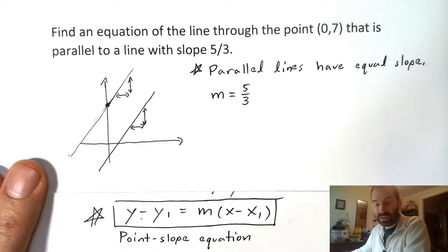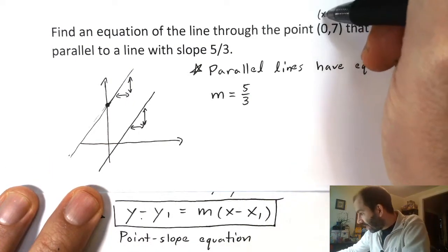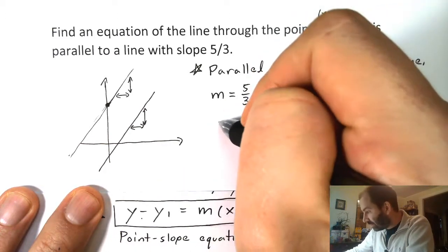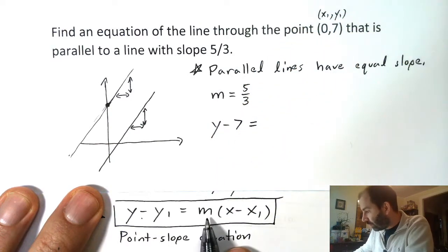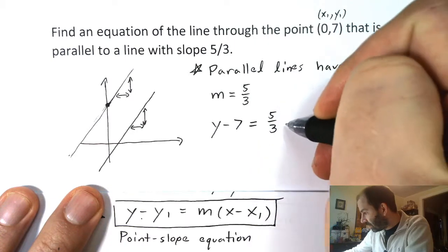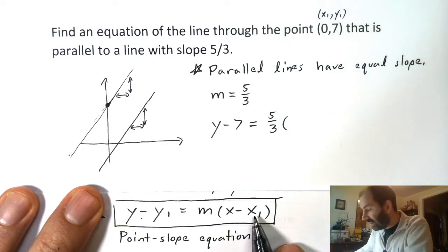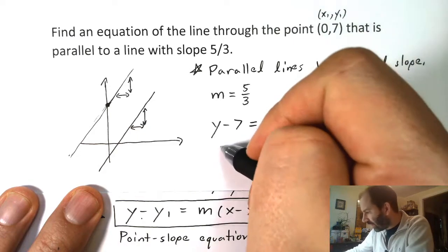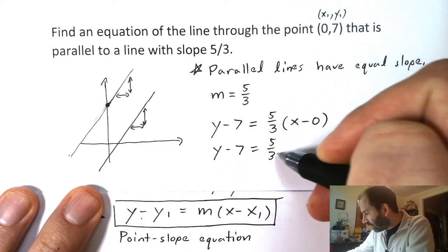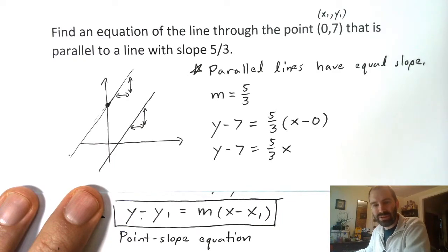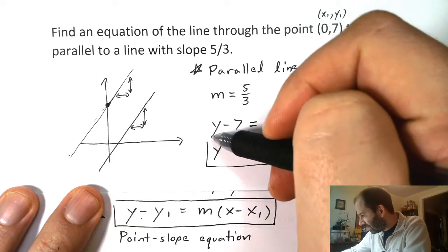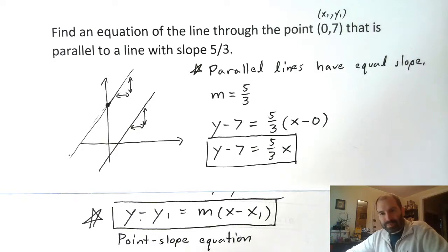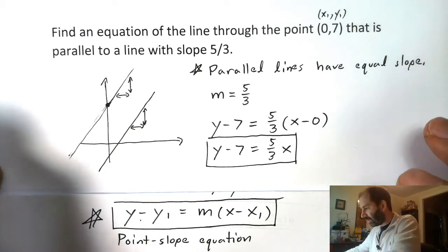We can write down the equation. Here's our (x1, y1). So y minus y1 is going to be y minus 7 equals m, which is 5 thirds, times (x minus x1), which is x minus 0. I can write that a little bit nicer: y minus 7 equals 5 thirds x. No need to subtract 0 if it's not doing anything. That's an equation for that line.